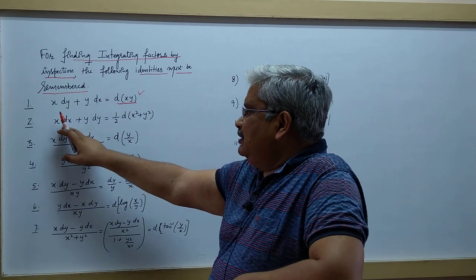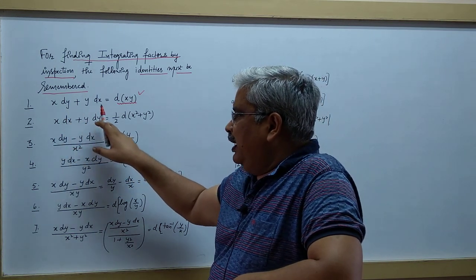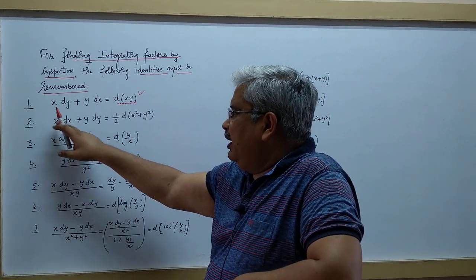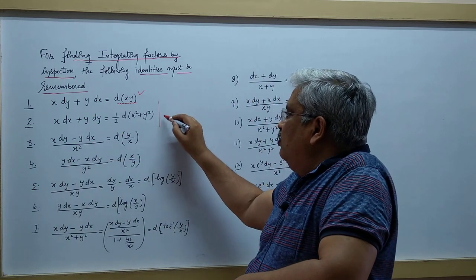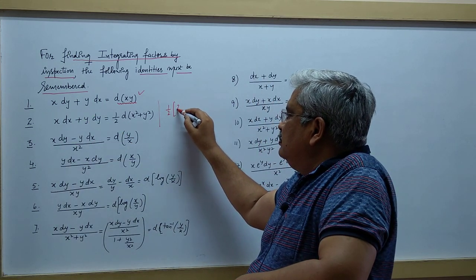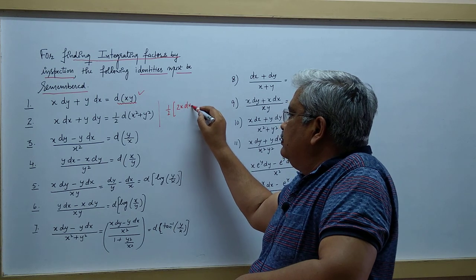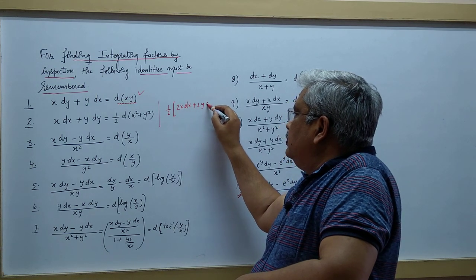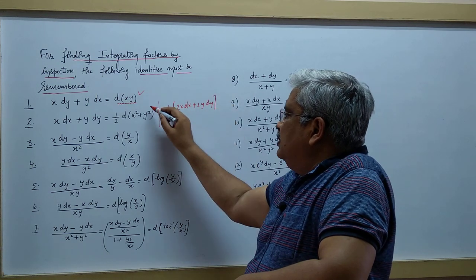But if it is x into dx plus y into dy, you know that I can multiply it by 2 and divide it by 2. I can write this way, and simply it becomes d(x² + y²)/2.